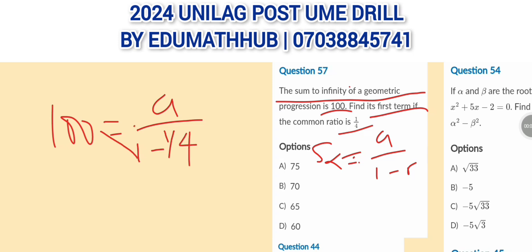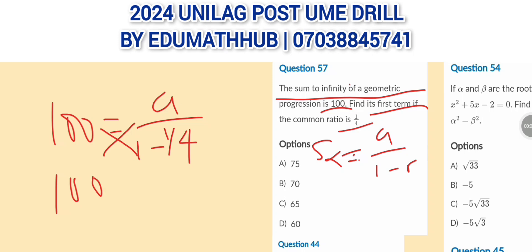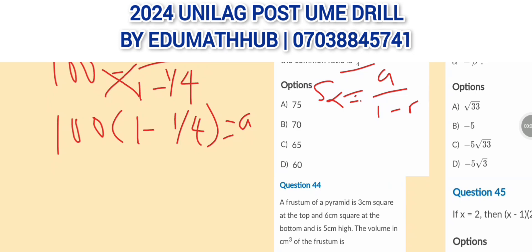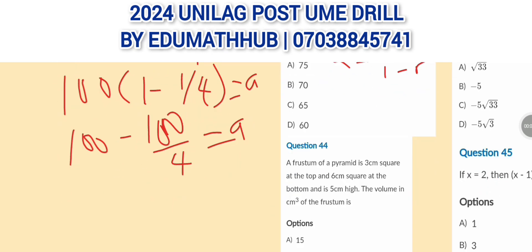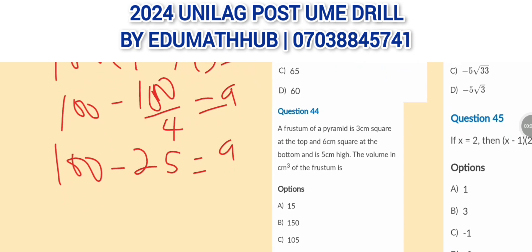The next step is to cross multiply: 100 times (1 minus 1 over 4) equals A. Expanding the brackets: 100 times 1 gives 100, then 100 times 1 over 4 is 100 divided by 4, which is 25. So we get 100 minus 25, which gives A = 75.